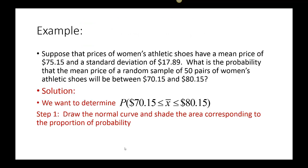Let's take an example. Suppose that the prices of women's athletic shoes have a mean price of $75.15 and a standard deviation of $17.89. We want to determine the probability that the mean price of a random sample of 50 pairs of women's athletic shoes will be between $70.15 and $80.15. Notice: we are not told the distribution is normal, and we are finding the probability of a sample mean with n = 50, which means we are using the central limit theorem.